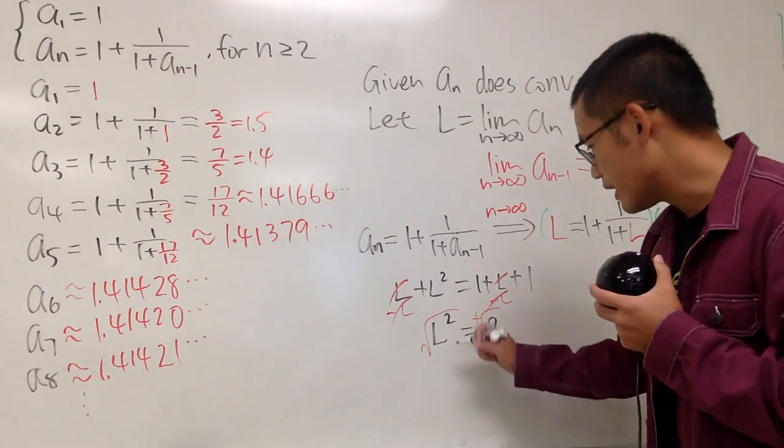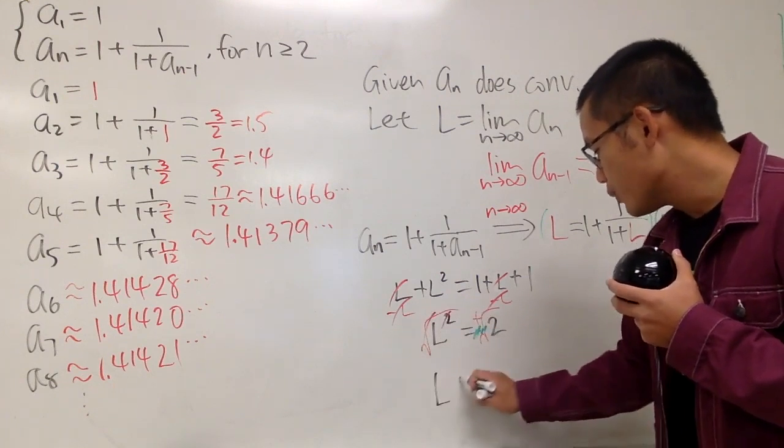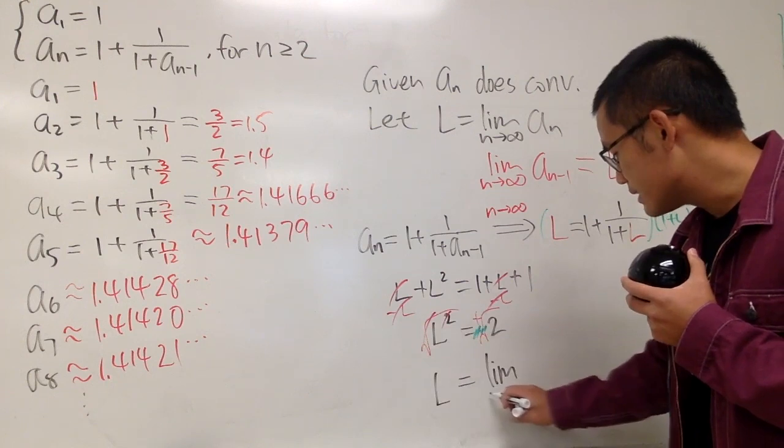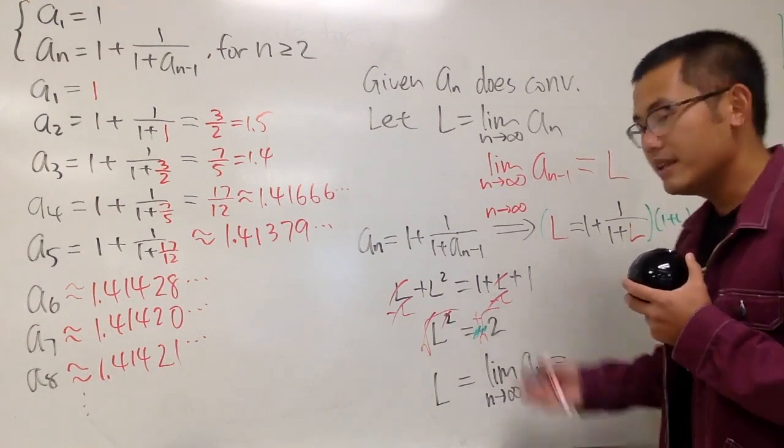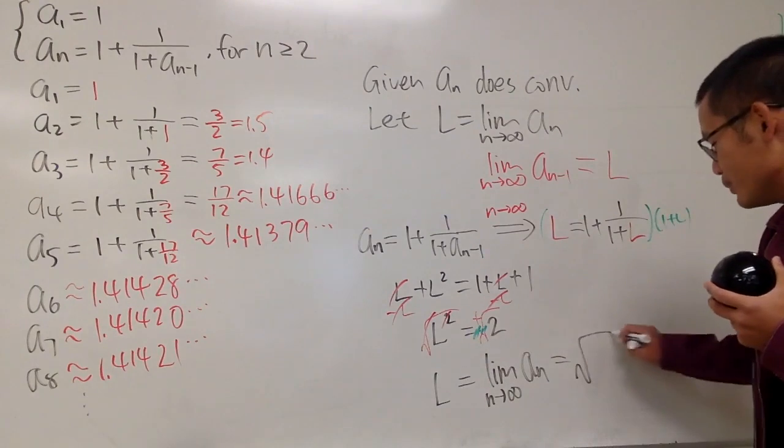So, in the end, we are saying, this is going to cancel, so, of course, L, which is the limit, as n goes to infinity of aₙ, this right here, it's equal to square root of 2.